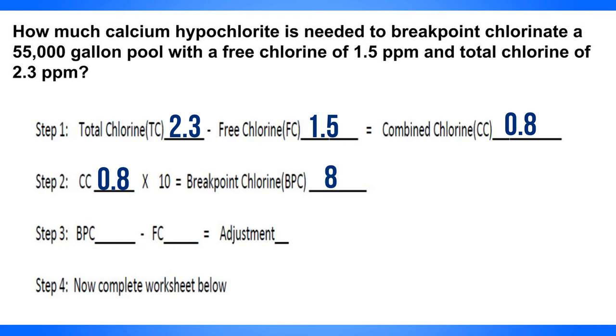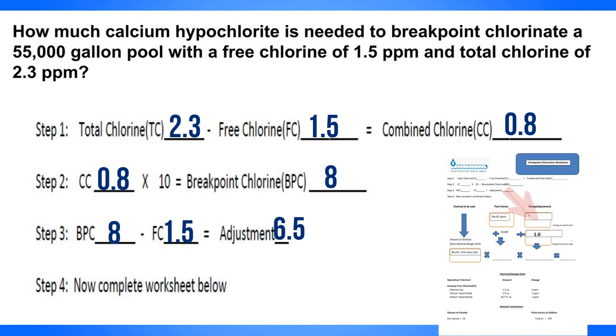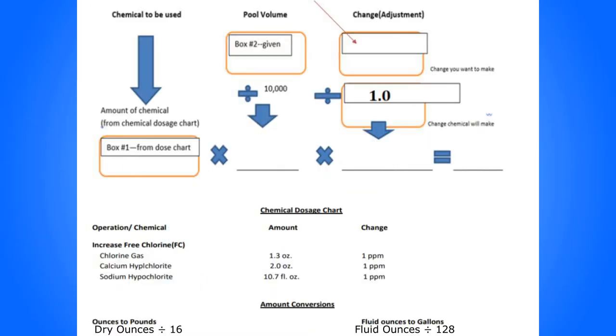You bring that number down and write it here on the line for BPC minus your free chlorine or FC, which is 1.5. Then 8 minus 1.5 will give you 6.5 here. You see there's an arrow and it says to put that 6.5 right here in your worksheet.